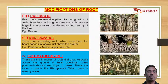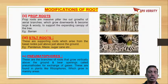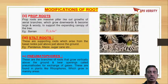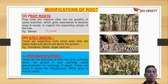Another root modification is prop roots. Prop roots are pillar-like roots which arise from the branches of the banyan tree, scientifically called Ficus, to give support to the branches. In Ficus tree, the branches are very long and extend to long distances. To give support, adventitious roots come from the branches - they are called prop roots, and their function is to give support.